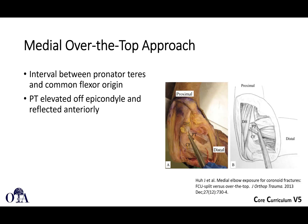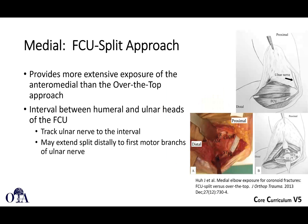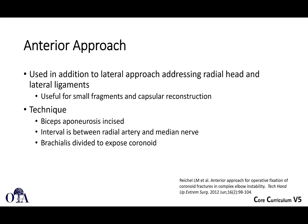For open approaches with plate and screw fixation, the medial over-the-top approach is described in the Journal of Orthopedic Trauma. This is in the interval between the pronator teres and common flexor origin. You can also do a flexor carpi ulnaris split approach — the interval between the humeral and ulnar heads of the FCU — tracking the ulnar nerve to the interval and extending the split distally to the first motor branch of the ulnar nerve. There is also an anterior approach where you incise the biceps aponeurosis; the interval is between the radial artery and median nerve, then the brachialis is divided to expose the coronoid.